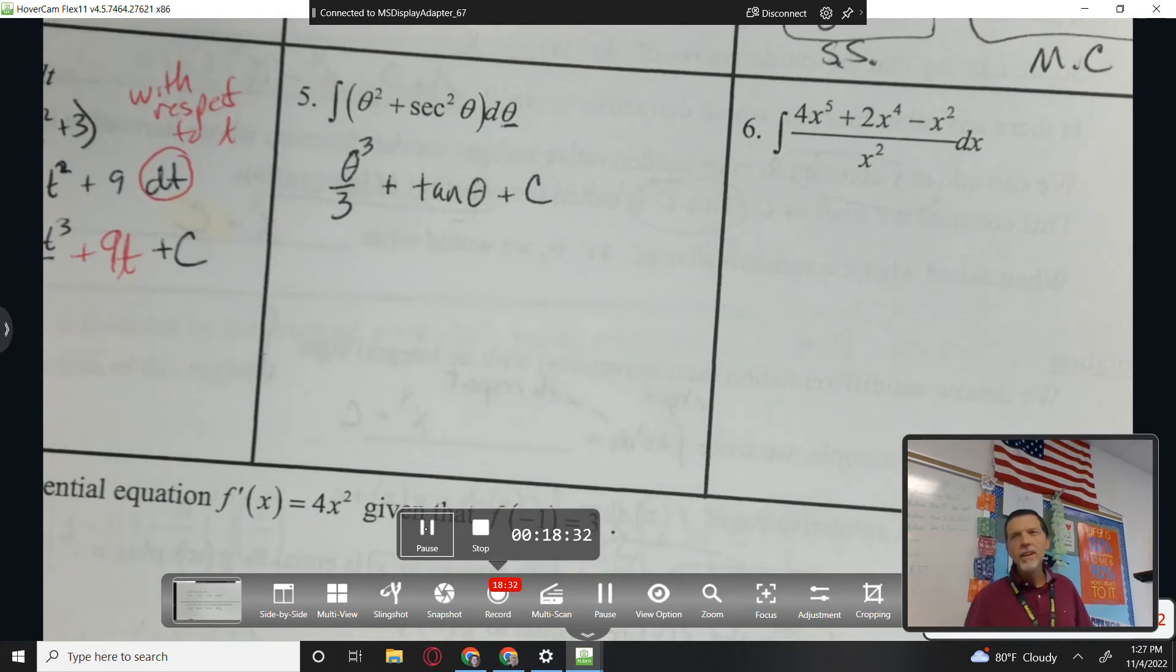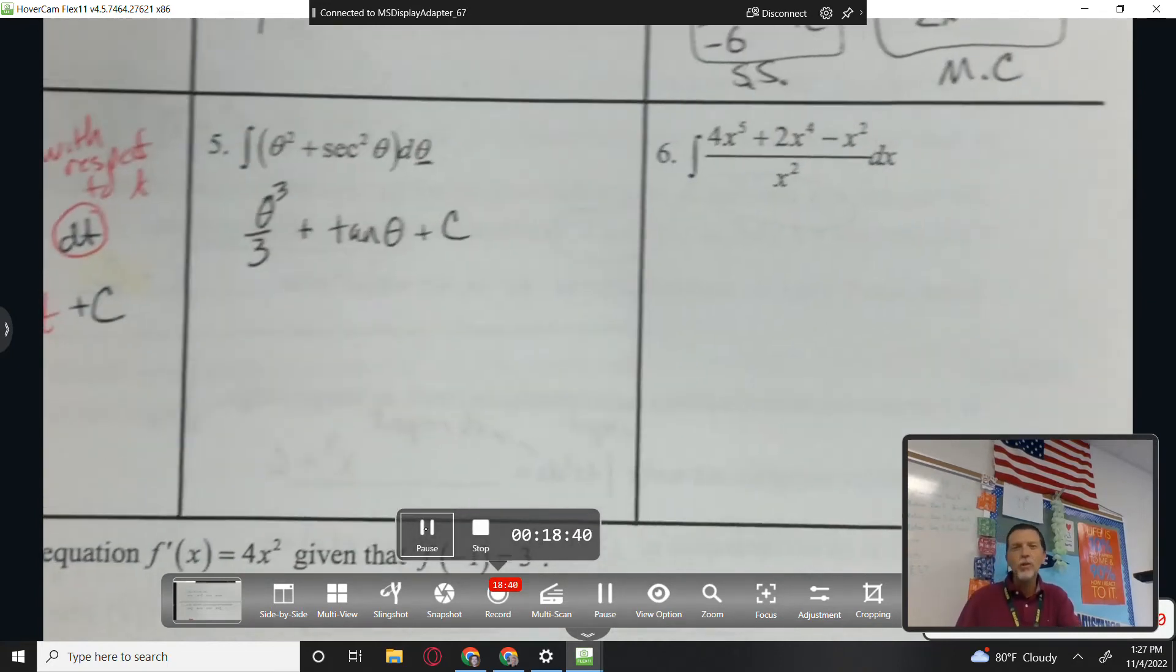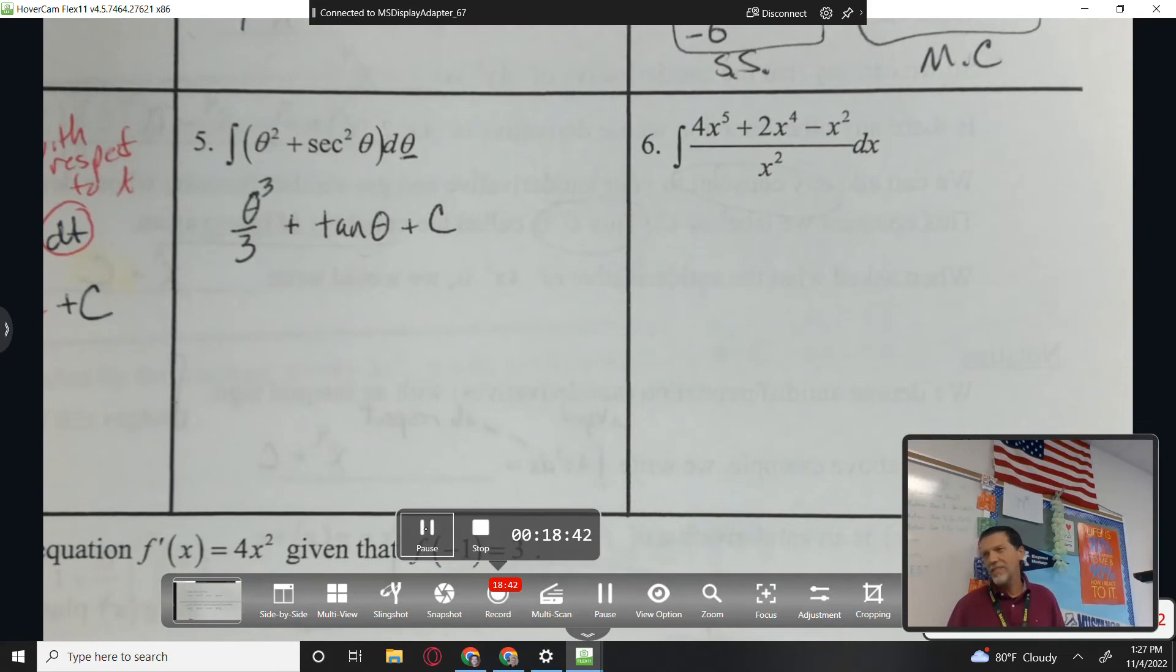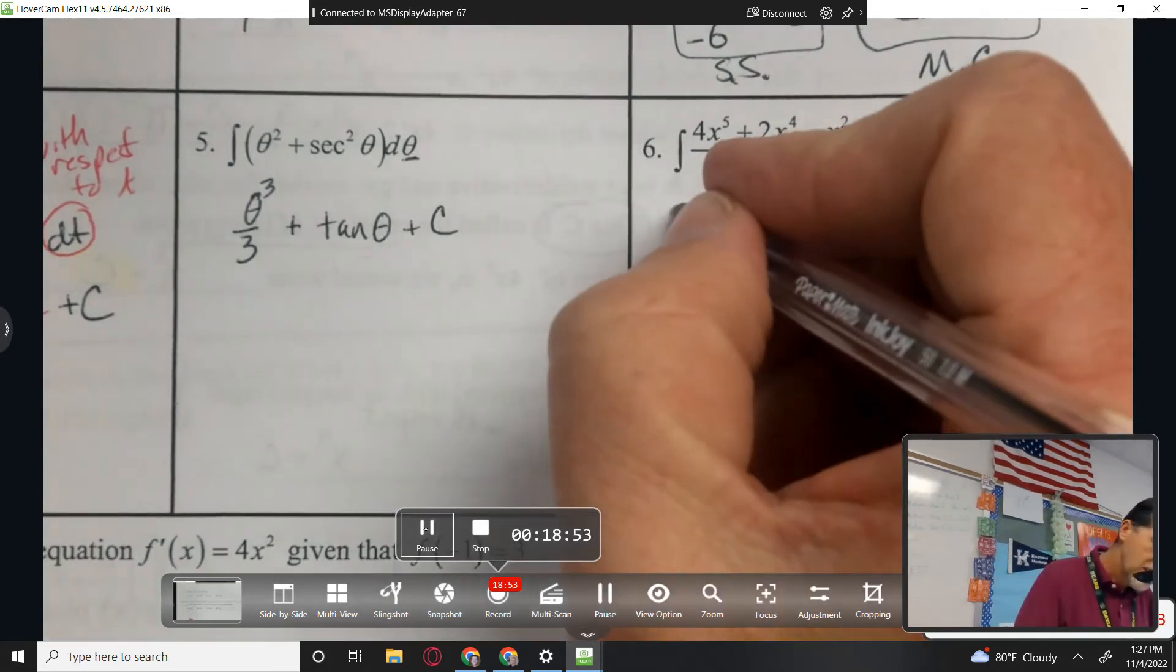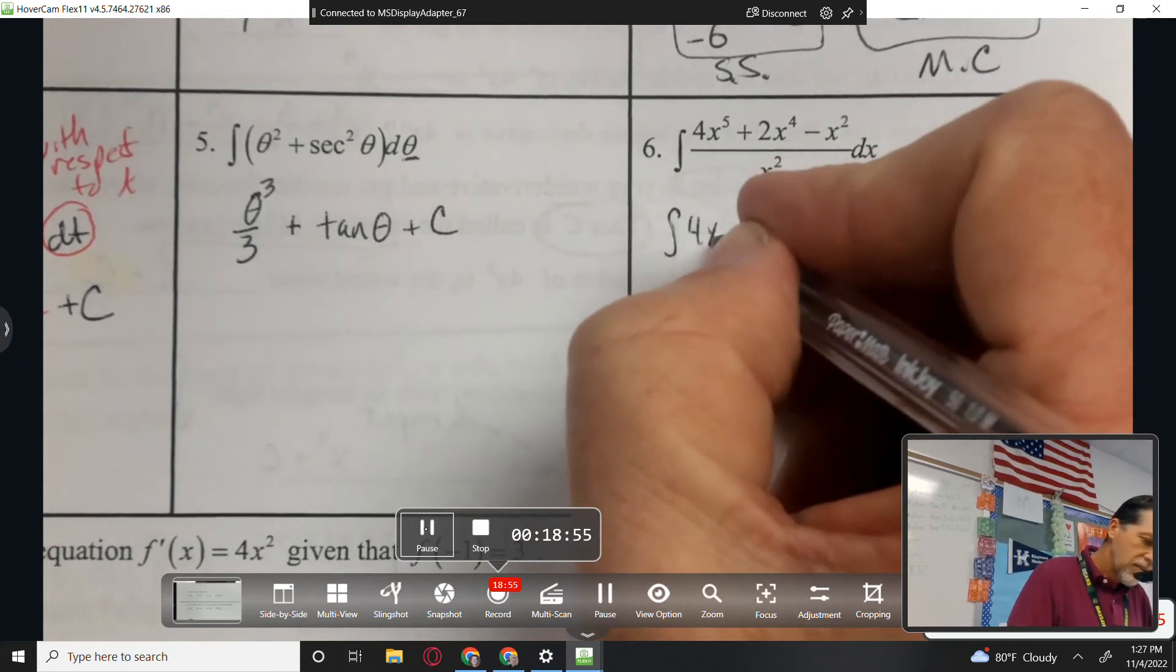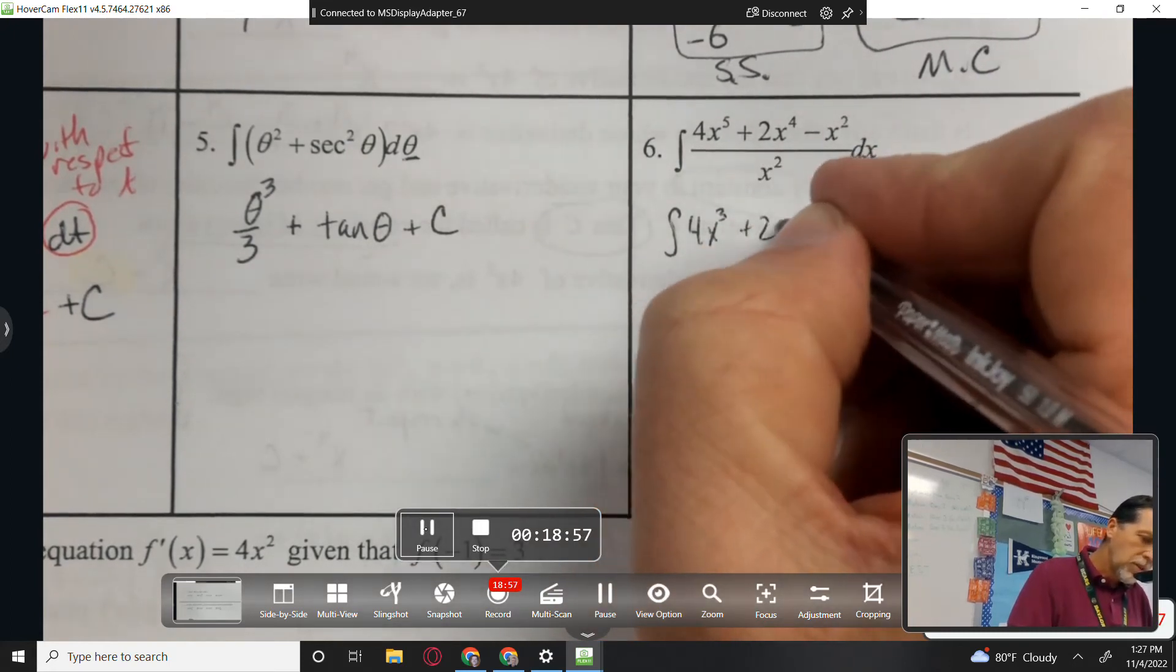Number six. This would be a cruel place to draw a popsicle stick, so I won't. There's not a quotient rule for antiderivatives. There's not a method to this other than divide it. I can divide them all first, like do the algebra first. 4x cubed plus 2x squared minus 1.